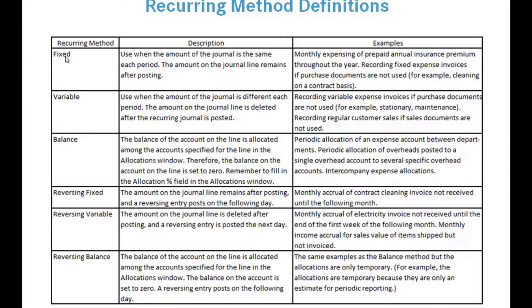When you pick a method of Fixed, this is used when the amount of the journal is the same in each period — for example, a recurring payment of $1,000 every month. This covers monthly expenses like annual insurance spread throughout the year, or fixed expenses such as cleaning or contractor services with a consistent fee for snow removal or cleaning.